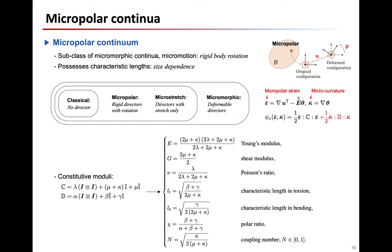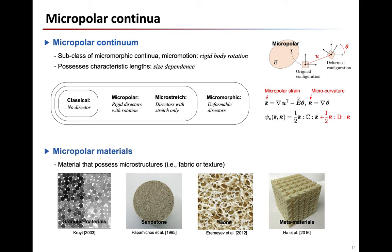Kinematics of micropolar materials can be characterized with two strain measures: the micropolar strain and the microcurvature. Unlike the classical Boltzmann continuum, the elastic energy of this material has an additional term, where C and D are constitutive moduli containing material parameters. Micropolar material possesses length scale parameters, meaning it exhibits size-dependent behavior in the elastic regime. Examples of materials that can be modeled as micropolar continua include geological materials like sands, silts, or sandstones, and even human bone or metamaterials.